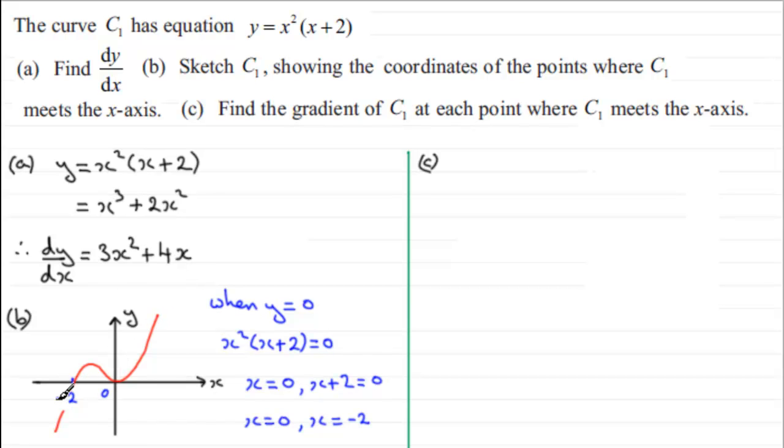Now to get that gradient, we've just got to put when x is minus 2 into our gradient function here, dy/dx. So when x equals minus 2, let's lead with the gradient, so it's just going to be 3 times minus 2 all squared, plus 4 times minus 2.